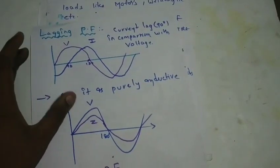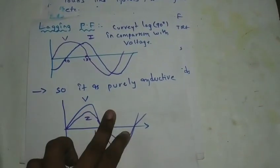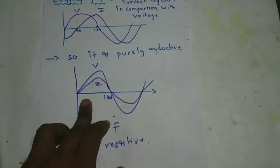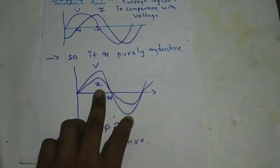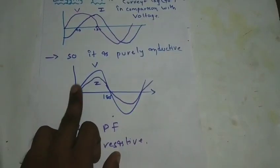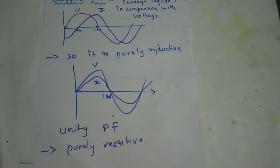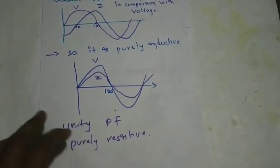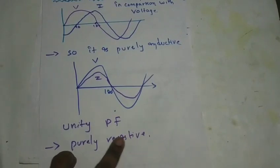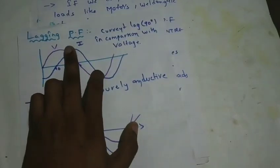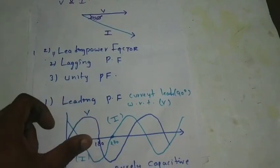The unit power factor is when the current and voltage are in phase. The current has no phase angle. There is no waste, and the load is pure resistive. For inductive loads, we maintain lagging power factor, and for capacitive loads, we maintain leading power factor.